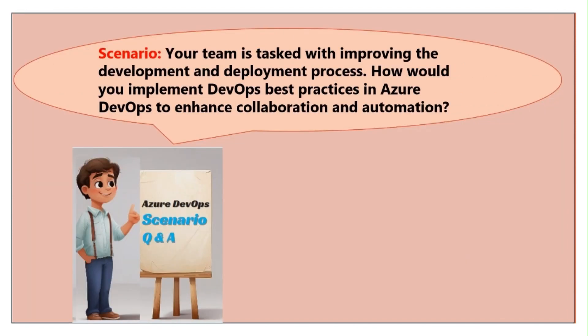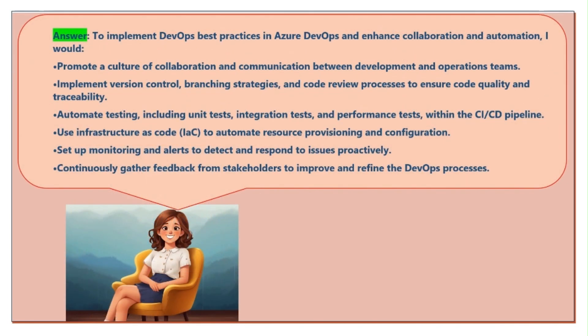Scenario twelve: your team is tasked with improving the development and deployment process. How would you implement DevOps best practices in Azure DevOps to enhance collaboration and automation? To implement DevOps best practices, I would promote a culture of collaboration and communication between development and operations teams. Implement version control, branching strategies, and code review processes to ensure code quality and traceability. Automate testing including unit tests, integration tests, and performance tests within the CI/CD pipeline.